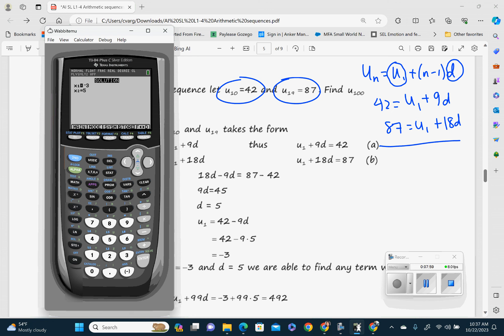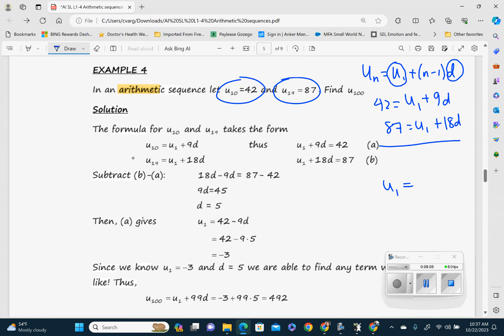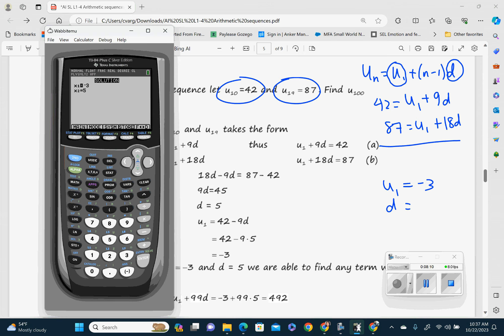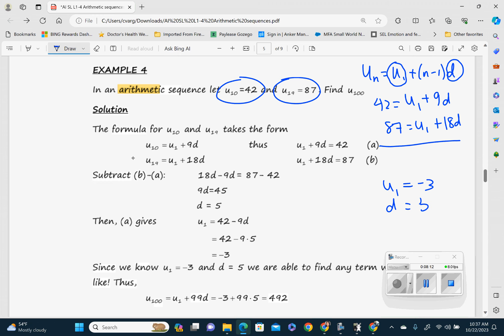And it tells us that the first number, which is U1, so U1 equals negative 3. U1 equals negative 3. And our D, which is our second number, gives us 5. So our common difference is 5.